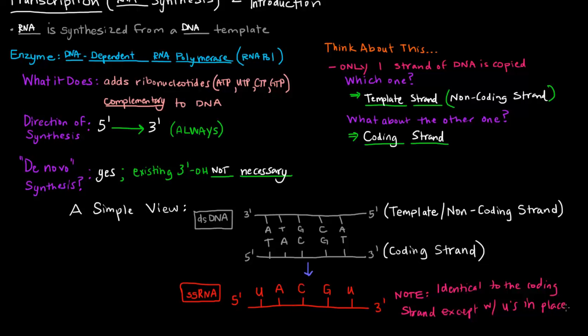except with U's in place of T's. This is T A C G T. Here this is U A C G U. So these three are the same, A C G. It's the same as the coding strand. The only difference is these T's are U's in the RNA. So that's a simplified view of what's going on here. We'll talk about it in more detail later.